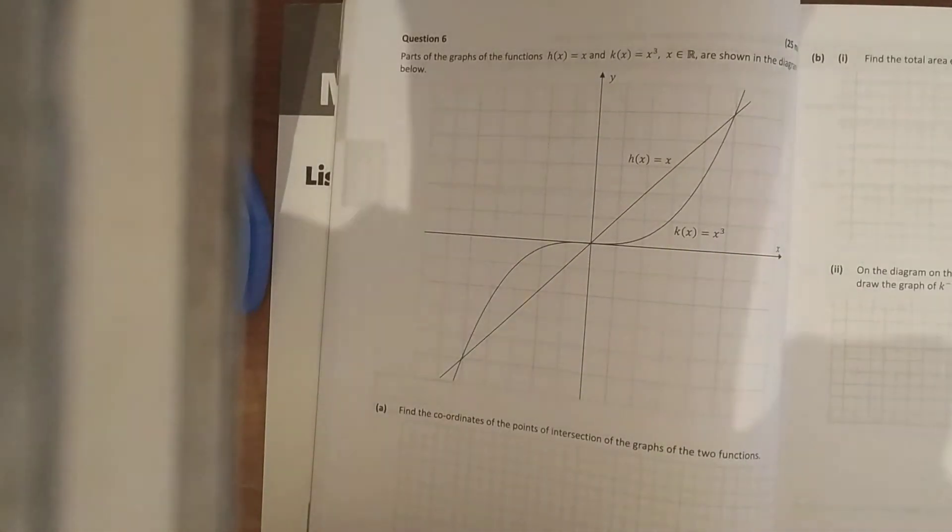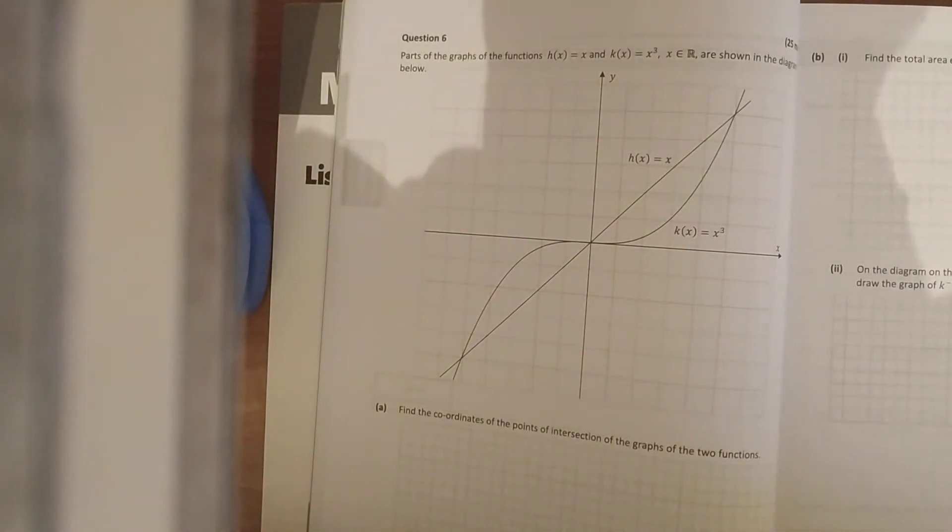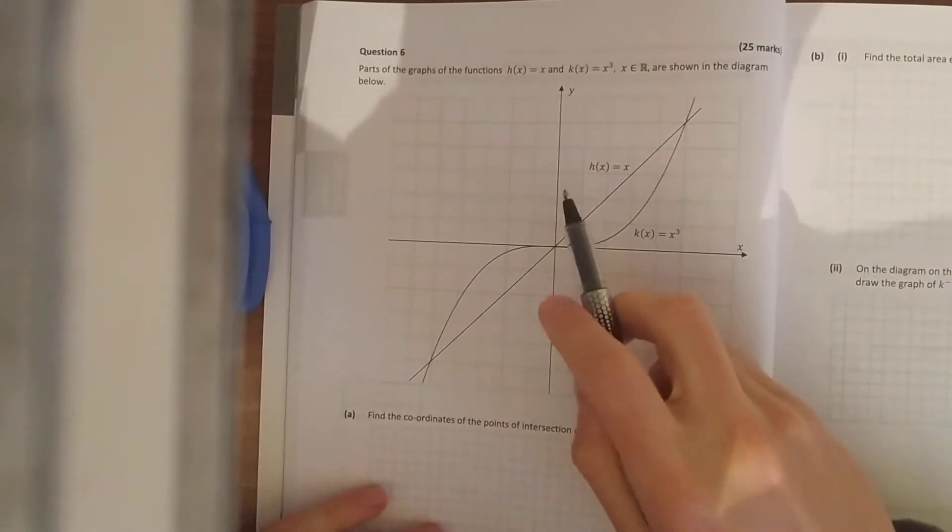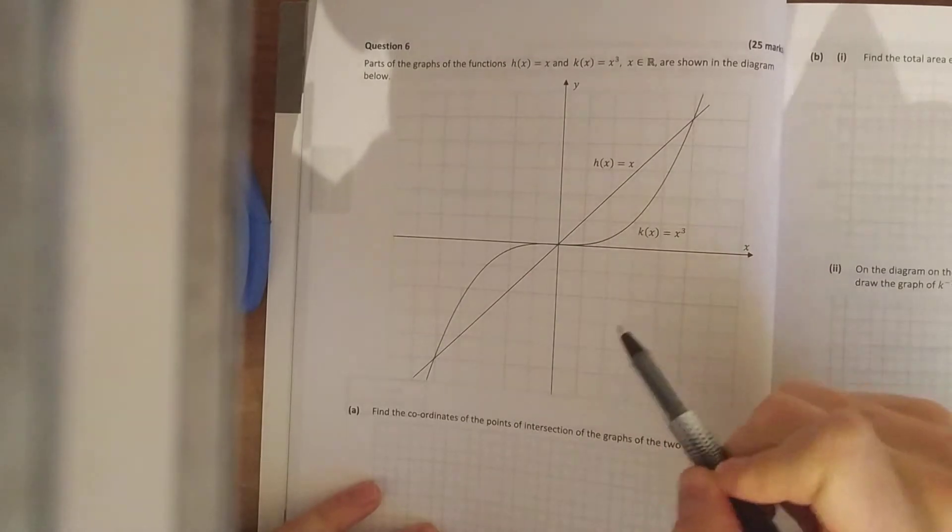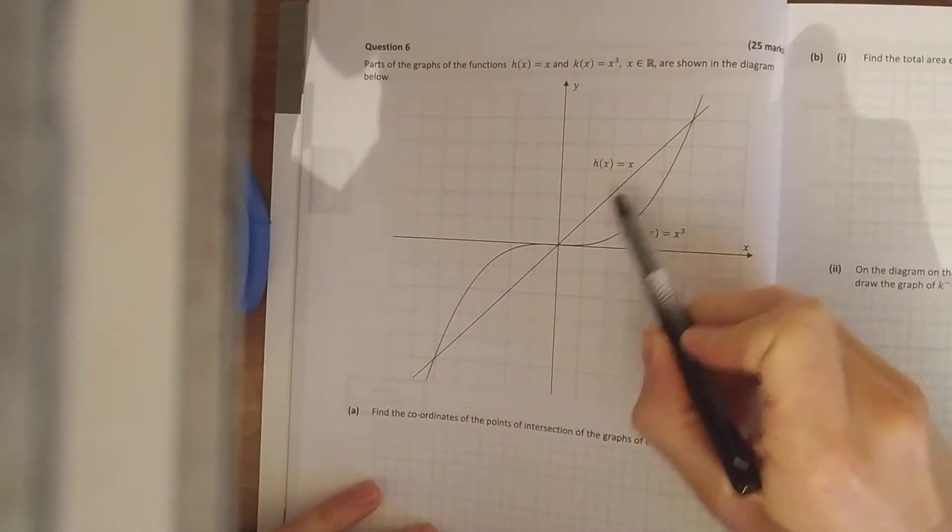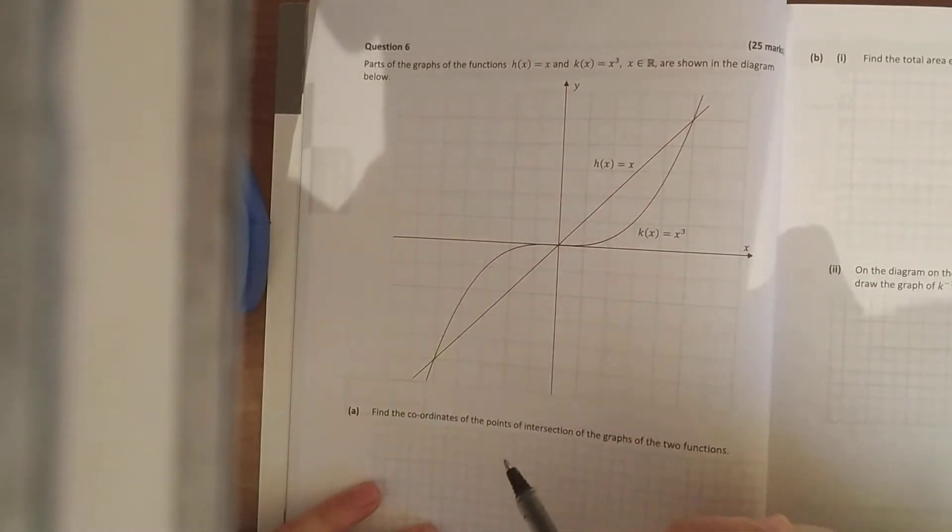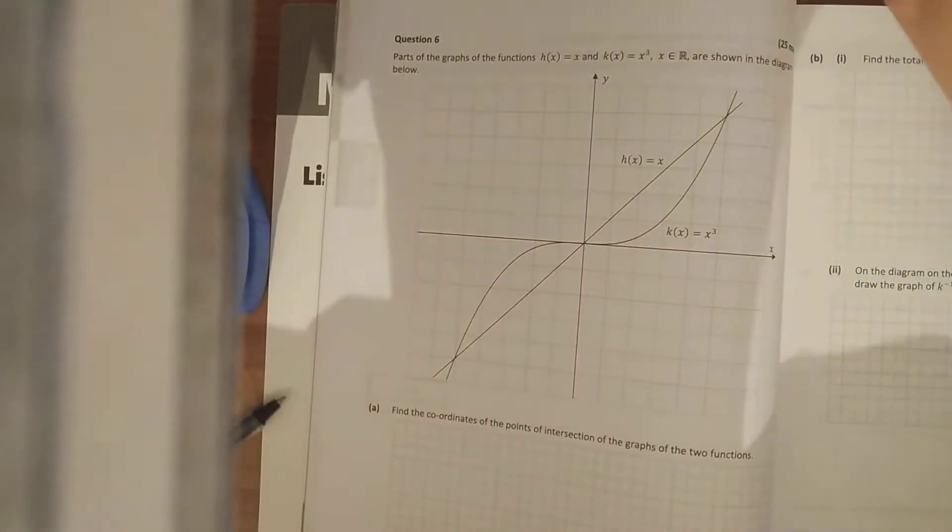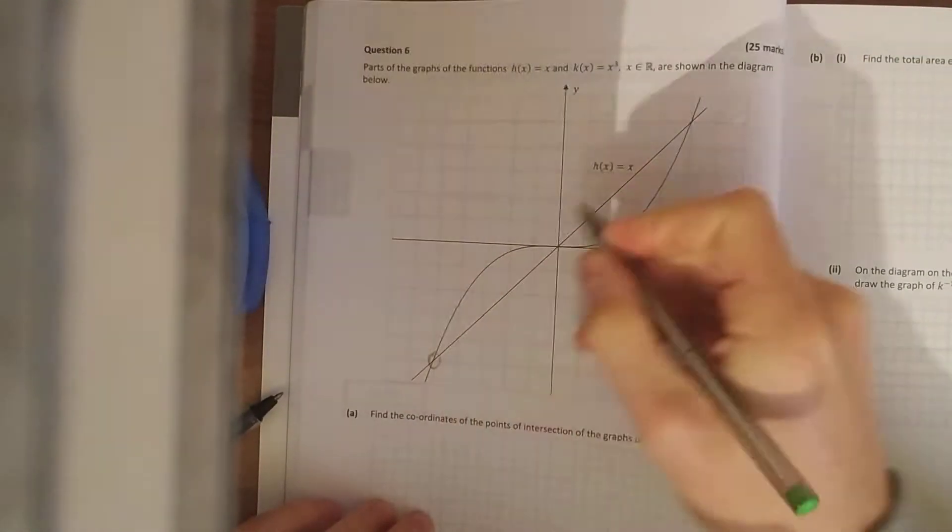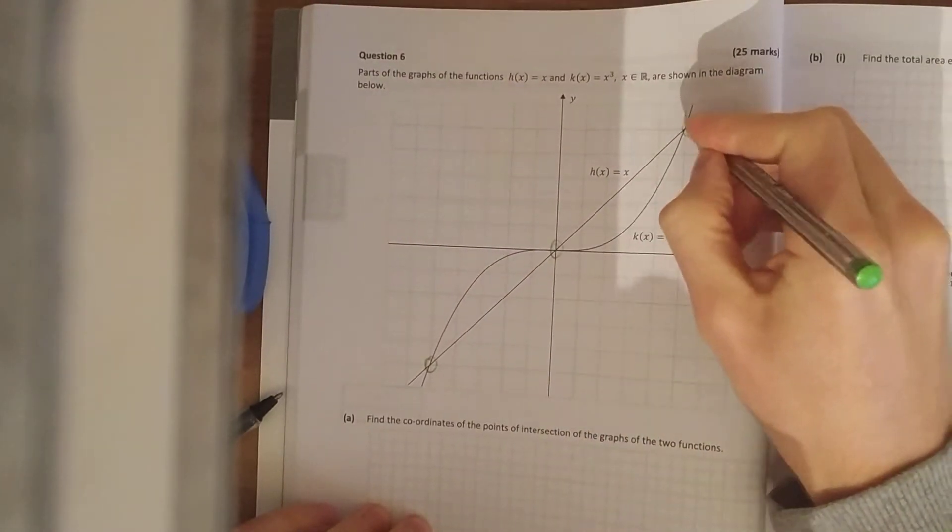Right, we look here at 2018 paper 1 question 6 through the functions and integration. The first bit here shows the graphs of two functions: you've got a linear function h(x) = x and a cubic function k(x) = x³. You can see there they intersect at three places.